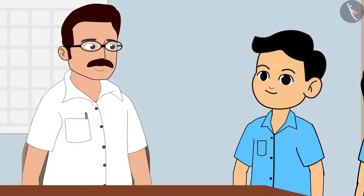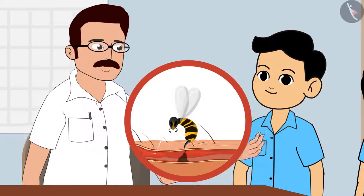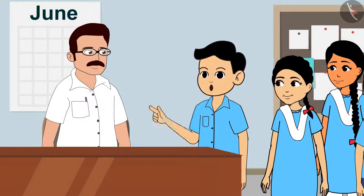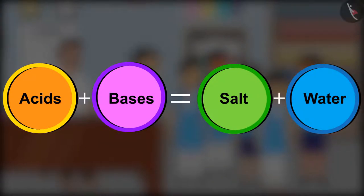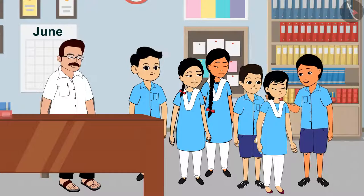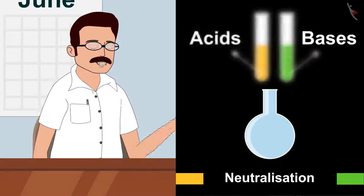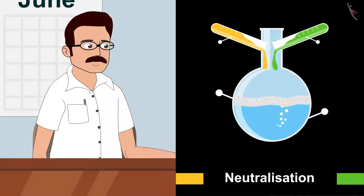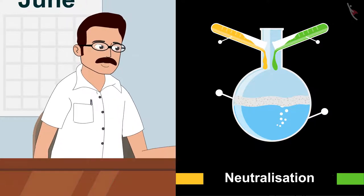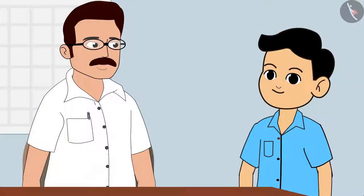How can baking soda be a medicine for an insect bite? When a bee stings, it releases an acid on our body — we feel the pain due to this. But sir, acid and baking soda? Baking soda is a base! Oh Raju, you forget everything. When acids and bases mix, salt and water are produced. Mohan is right — both acids and bases nullify each other's effect, and salt and water are formed. This is called neutralization. In this case, baking soda nullified the effect of the acid produced by the sting.